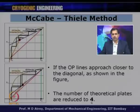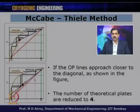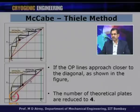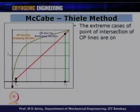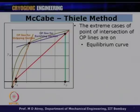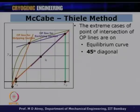The number of theoretical plates are reduced to 4 in this case. If the operating line moves towards the y equals x line, the vertical line jumps are going to be very large, while if you go towards the equilibrium line, these jumps are smaller and the number of plates is very large. The two extreme cases of the point of intersection of the operating lines are: one where the operating lines are very close to the equilibrium curve (intersecting on it), and the other where the operating lines lie on the diagonal itself.